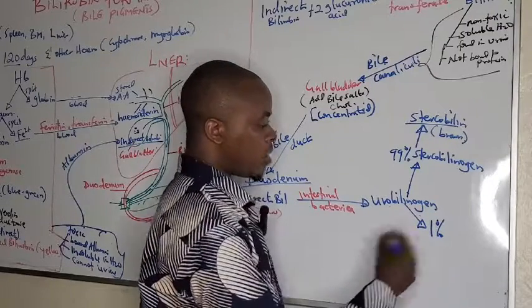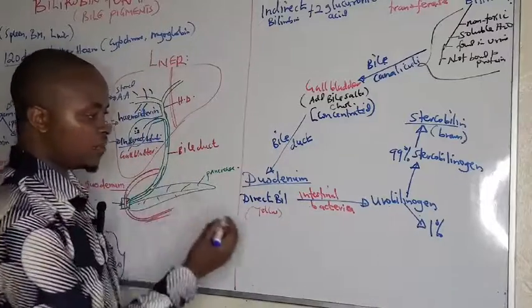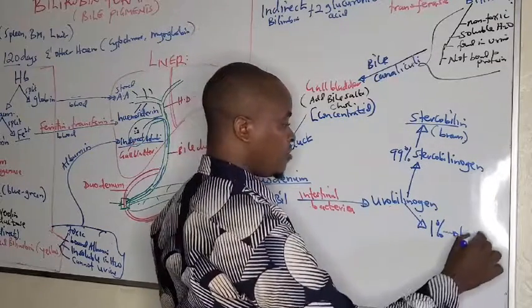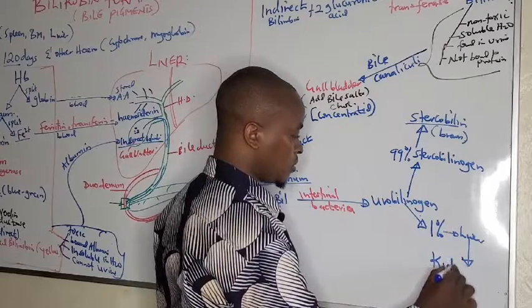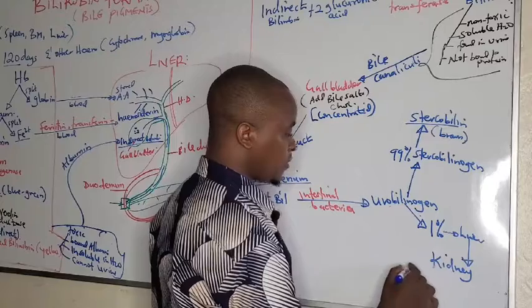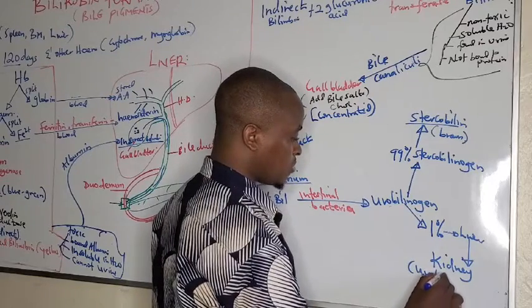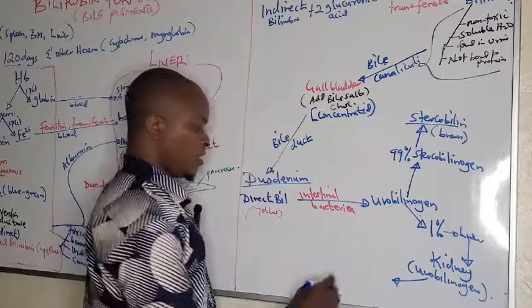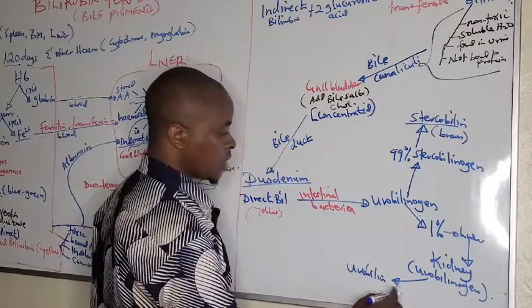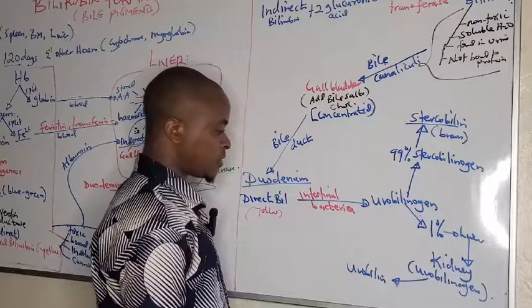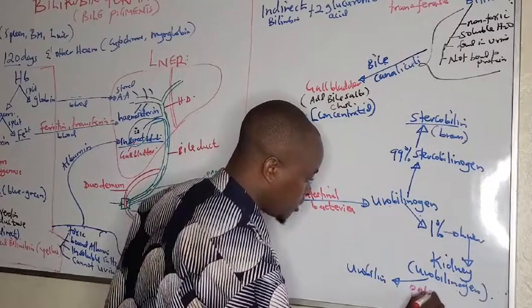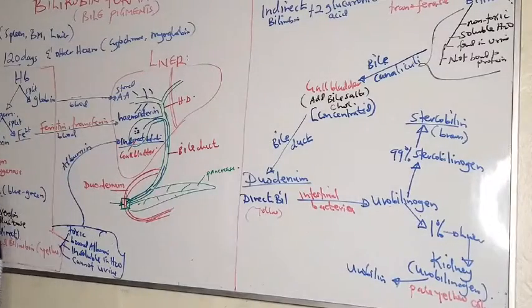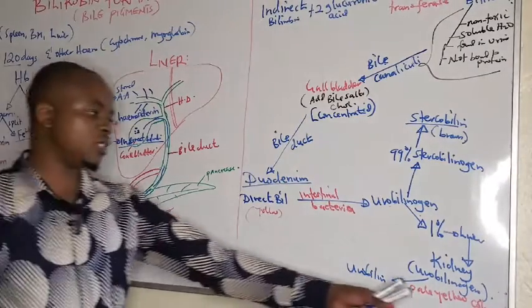That is 99% of the urobilinogen formed within the duodenum. The remaining 1% undergoes enterohepatic circulation — it goes back to the liver, and from the liver some goes to the kidney, where it is excreted as urobilinogen. When exposed to surrounding air, it is converted to urobilin, which gives urine its pale yellow color.